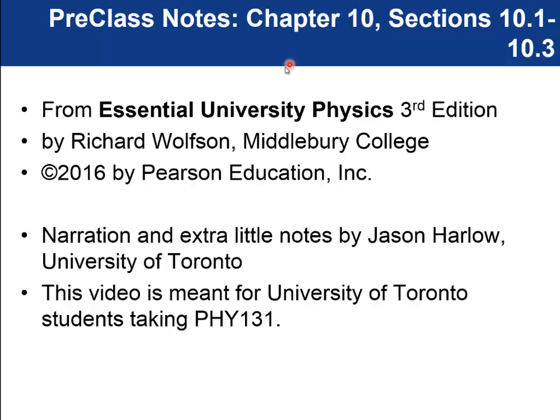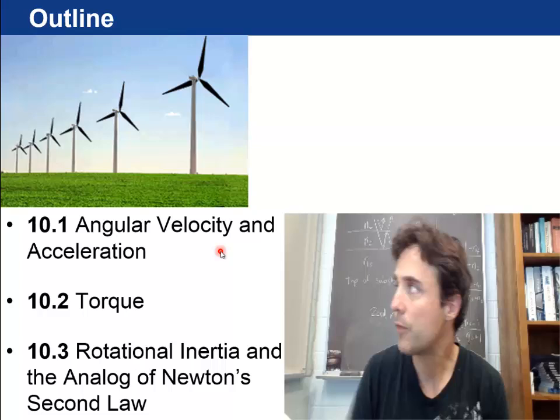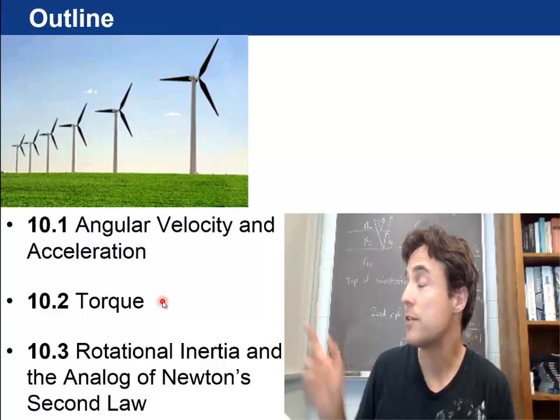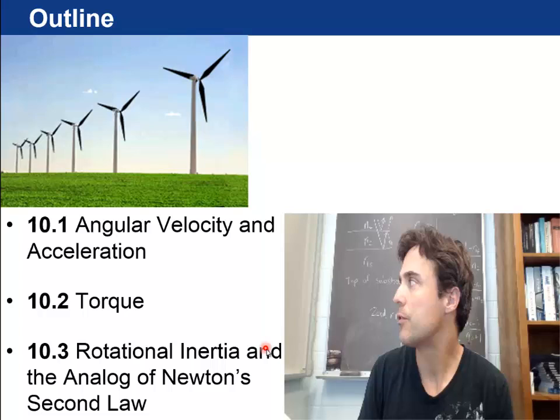Hi there, my name is Jason Harlow. I'd like to take you through the first three sections of Chapter 10 of Essential University Physics by Richard Wolfson. The three sections are angular velocity and acceleration, the second section on torque — which is how you use force to get something rotating — and the third section on rotational inertia and the analog of Newton's second law.